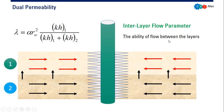The second parameter is the interlayer flow parameter, lambda, which represents the ability of flow between the layers. It is dependent on the wellbore radius, the permeability, and the thickness of both the first layer and the total of both layers combined. It is the measure of the cross flow ability between the layers.